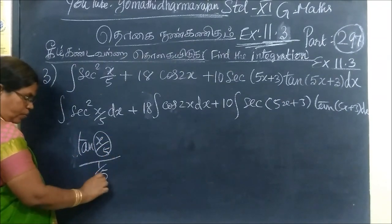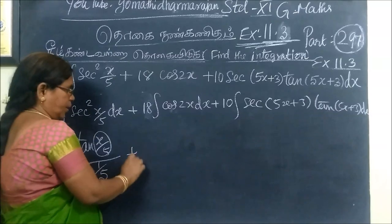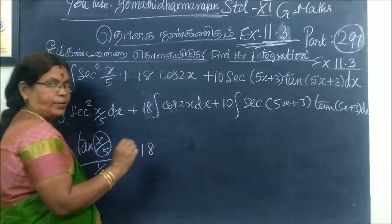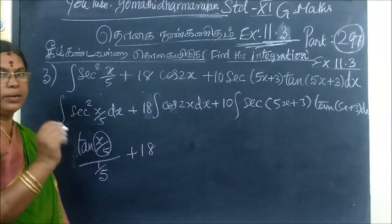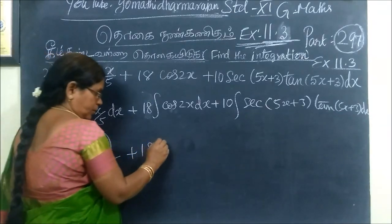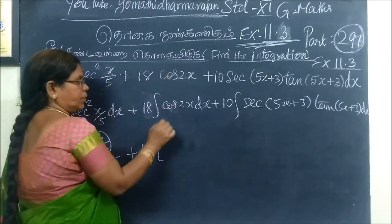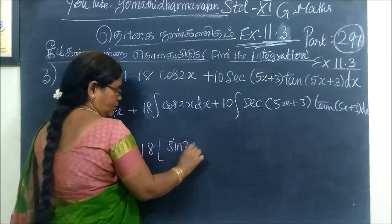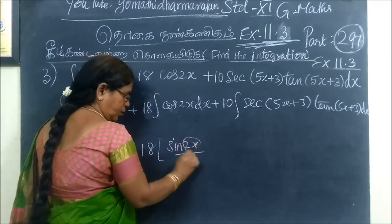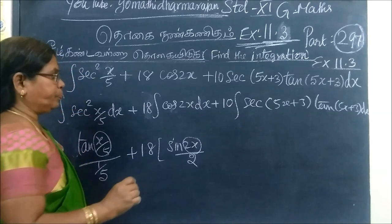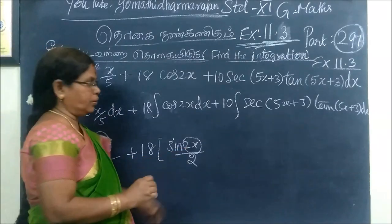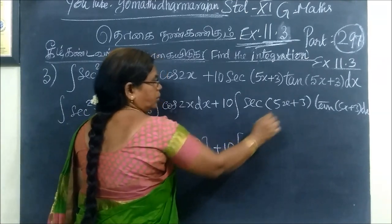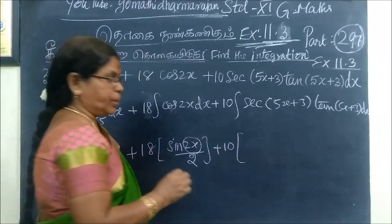Integral of sec² x is tan. So tan x by 5, then divide. This is the differentiation, 1 by 5. Then plus 18 cos is the integration sign. Minus for this. This is the differentiation.